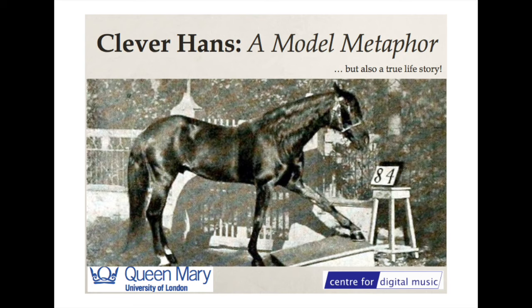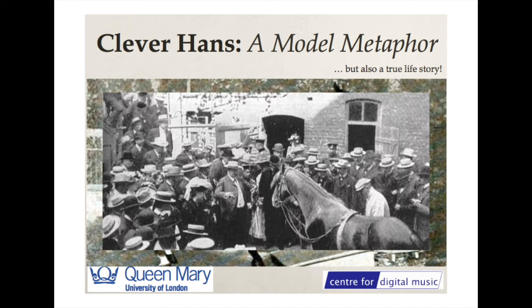Anyone could ask Hans a question. For example, "1.24 — which number is in the tenths place?" — and he would tap out four. So he seemed to be able to answer questions without relying on cues. However, an experimental psychologist, Oskar Pfungst, said: "These questions you're asking Hans in these uncontrolled environments are possibly not testing what you think they're testing. Let me conduct controlled experiments to determine, first of all, whether Hans really does possess arithmetic abilities, and if he doesn't, how is he appearing to do so?"